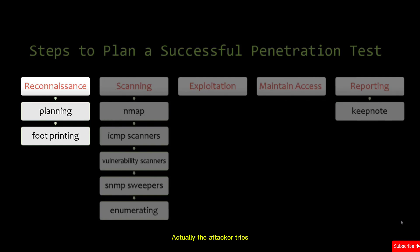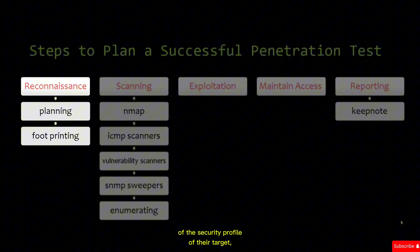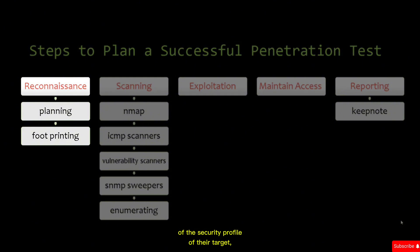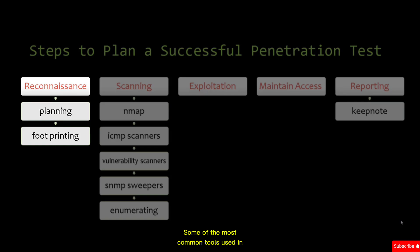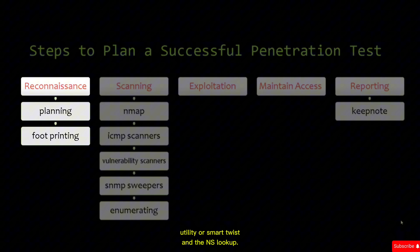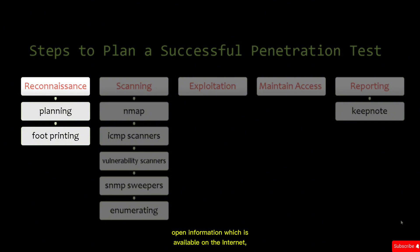In the first phase — reconnaissance — the attacker tries to gain information about the target. This approach can be active or passive. The attacker tries to build a blueprint of the security profile of the target, whether it's an organization, a person, etc. It involves gathering information about the network being attacked and creating a profile of the organization's networks, systems, and applications. Common tools include WHOIS, smart ways, and NSLookup.